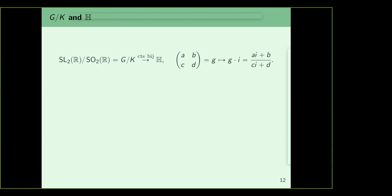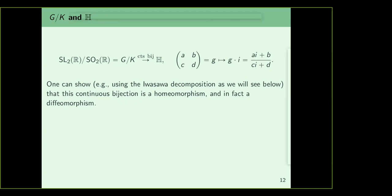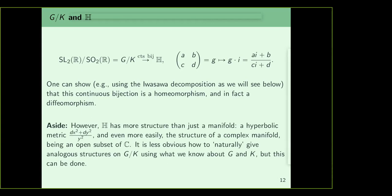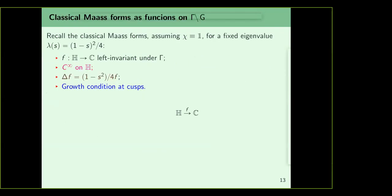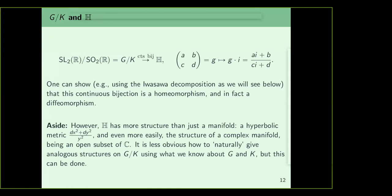H has more structure than just a manifold — it has a Riemannian structure, a hyperbolic structure, and a complex structure. One can ask whether these structures can be recovered from just G and K. The manifold structure can be recovered from G and K because K is a closed subgroup of a Lie group and therefore G mod K has a manifold structure. Only some kinds of G mod K have such structures, but let's not get into this.